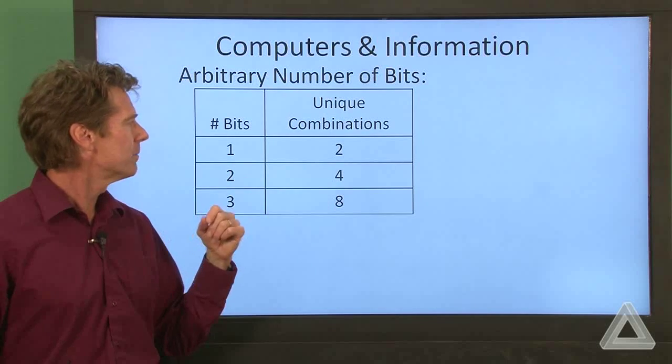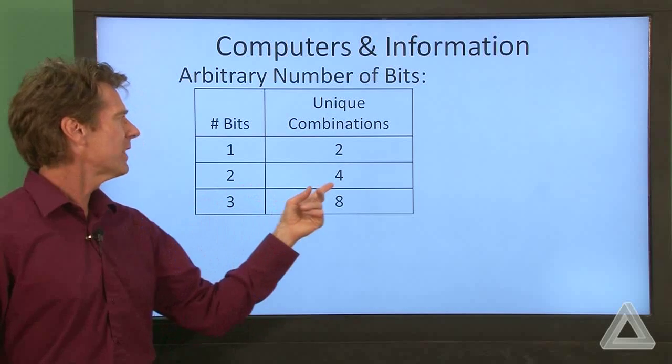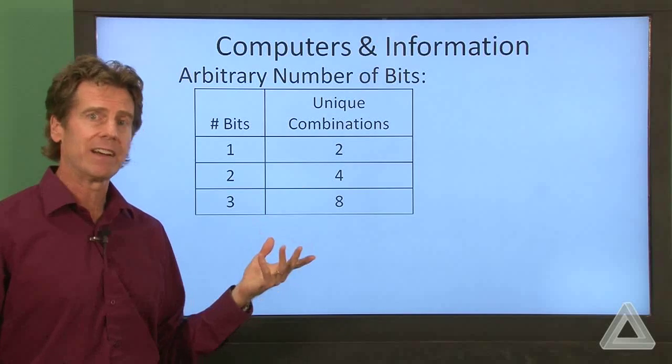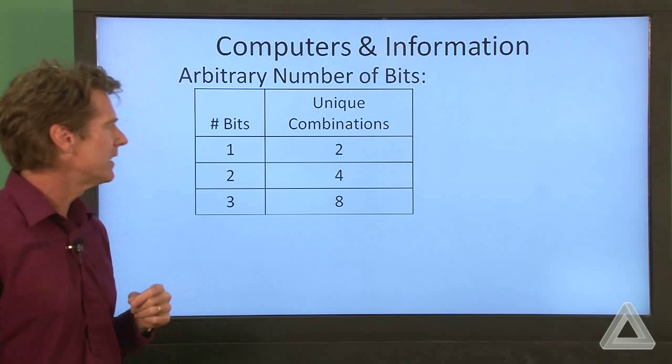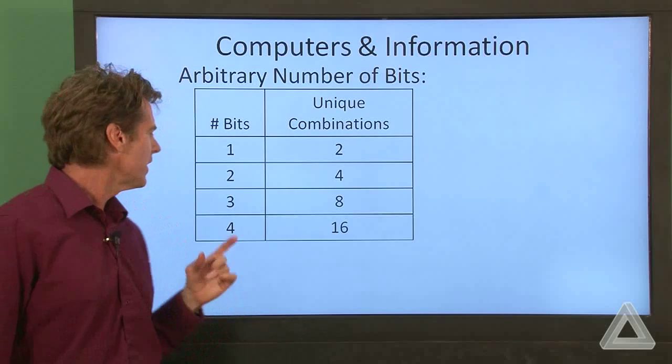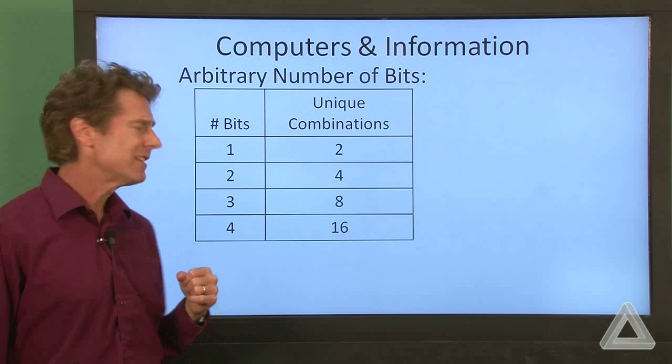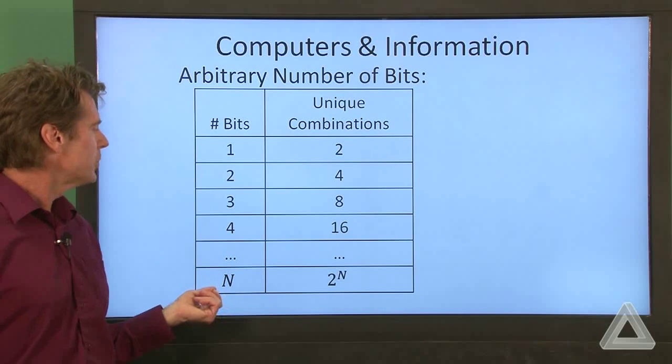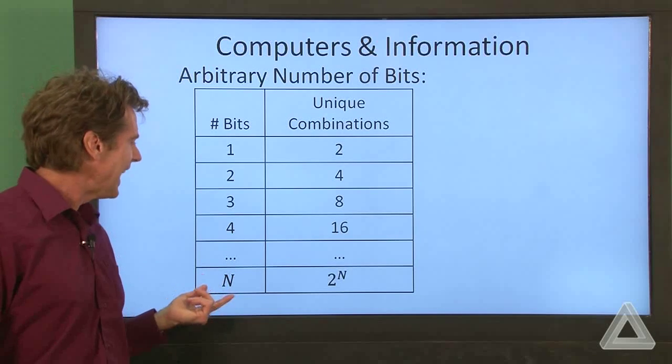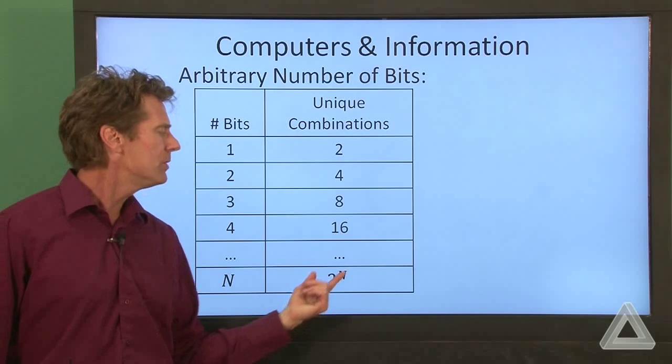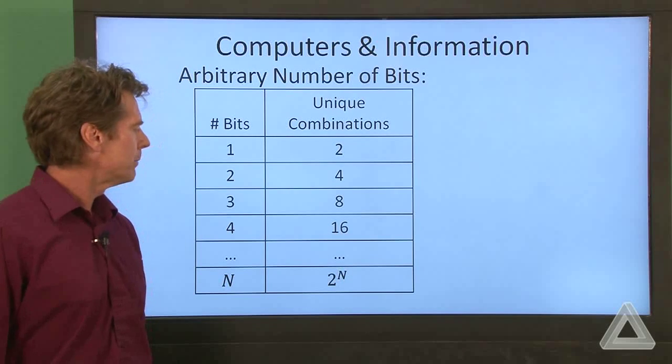Everything we had with two bits, but we could tack on a zero, or everything we had with two bits and we could tack on a one. So that gives us eight unique combinations. And continuing on to four bits, we have sixteen unique combinations. Or going up to an arbitrary number of bits, n bits, then we have two to the n unique combinations.